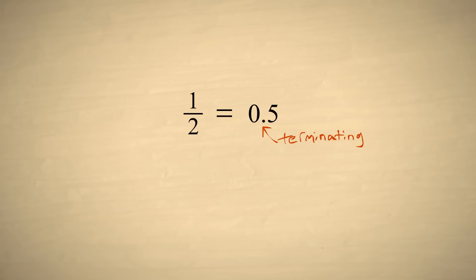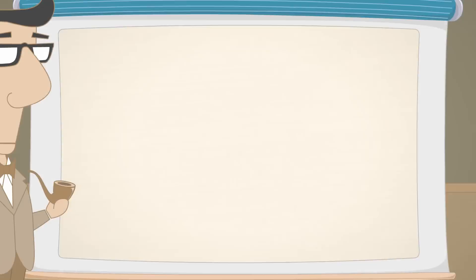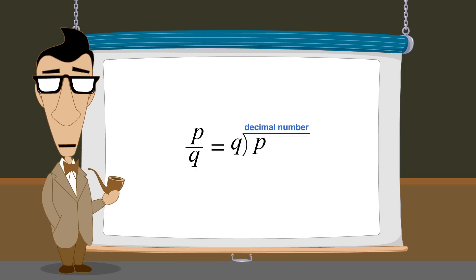So although some rational numbers, like one-half, can be represented by a finite number of digits, others, like one-third, cannot. We have seen that by dividing the numerator by the denominator, any fraction can be converted to an equivalent decimal number which will either terminate or repeat. In the next lecture we will see how to convert any terminating or repeating decimal number to a fraction.